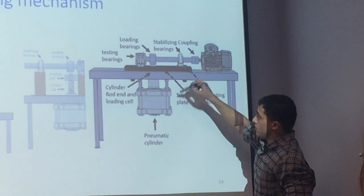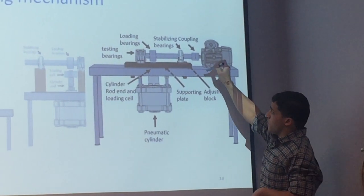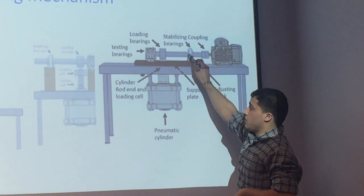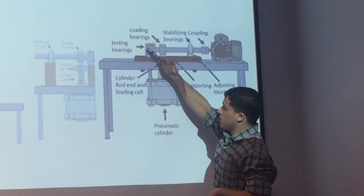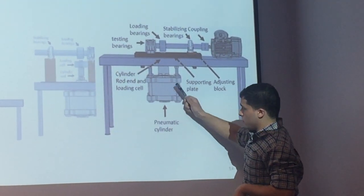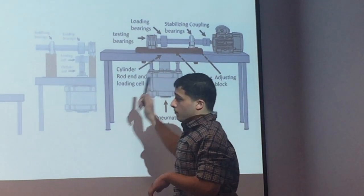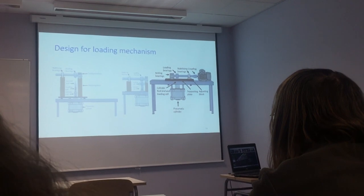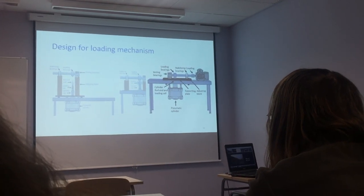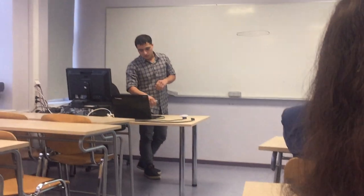In the final design you can see: one adjusting block, the motor, the coupling, the stabilizing bearing, the testing bearing, and the pneumatic cylinder. There are other design iterations available as an appendix in the presentation.